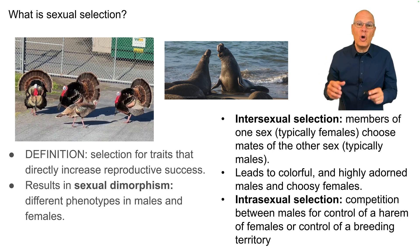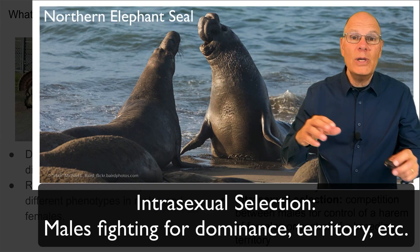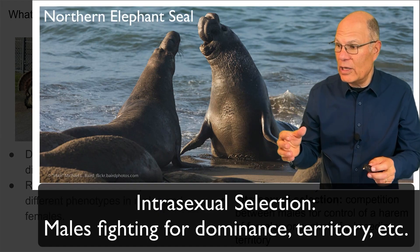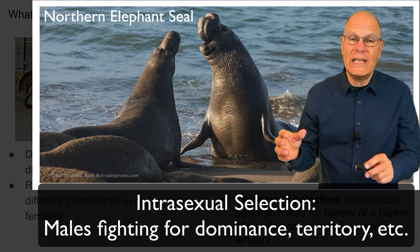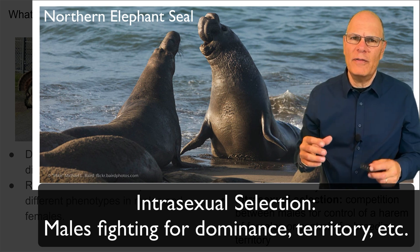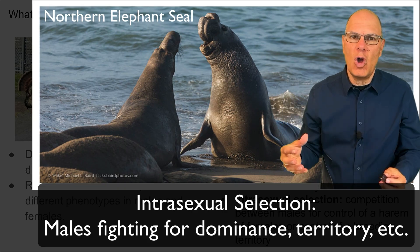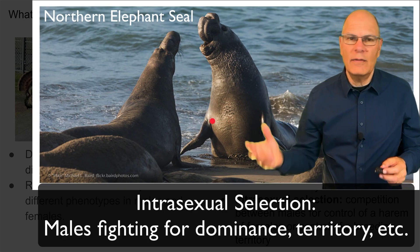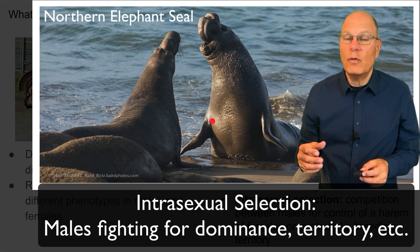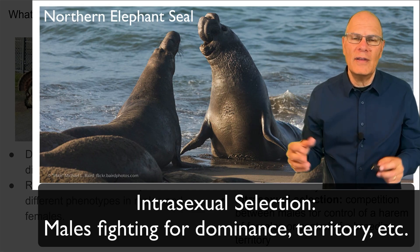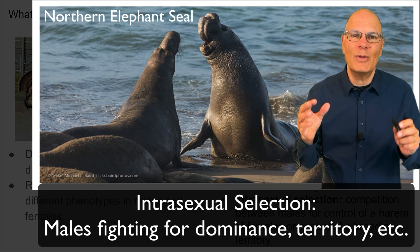The other kind of selection is called intrasexual selection, where competition between males for control of a harem of females or a breeding territory leads to males that are aggressive and often very big and strong. This is what we see with elephant seals off the coast of Northern California — they're about twice the size of females, huge, aggressive, testosterone-filled animals.